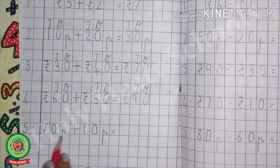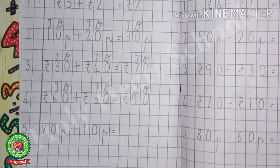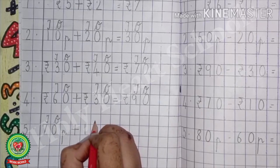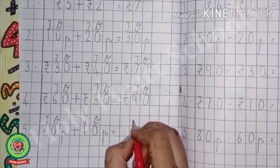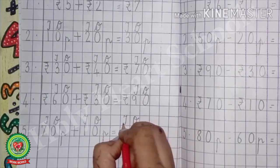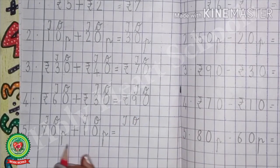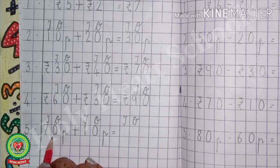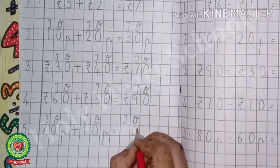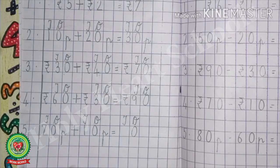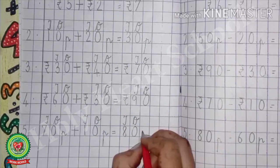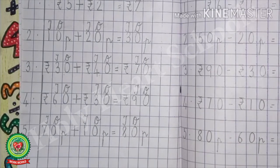Number 5: 70 paisa plus 10 paisa. Again write the place value chart — 1s and 10s on both numbers, and 1s and 10s in the answer. Starting from the 1s side: 0 plus 0, the answer is 0 — write 0 under 1s. Now 7 plus 1, the answer is 8 — write 8 under 10s. With that, write the unit, which is paisa.